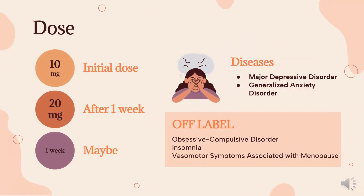Dosing. Major Depressive Disorder: indicated for acute and maintenance treatment of MDD — 10 mg PO once daily, may increase to 20 mg per day after 1 week. Generalized Anxiety Disorder: indicated for acute treatment of GAD — 10 mg PO once daily, may increase to 20 mg per day after 1 week. Maintain at the lowest effective dose and assess need for therapy periodically if extended therapy is required.